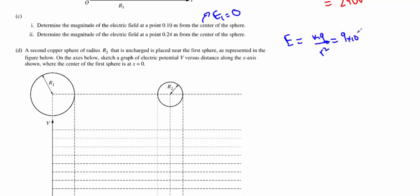You're going to do your 9 by 10 to the 9, and you're going to do your Q of 6.4 times 10 to the negative 9 coulombs. And we're going to divide that by 0.24 meters squared, and you're going to get an electric field of 1,000 newtons per coulomb.